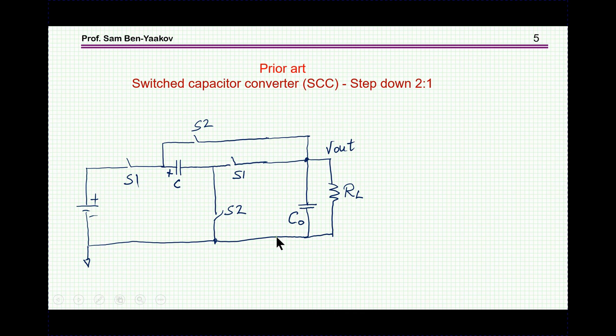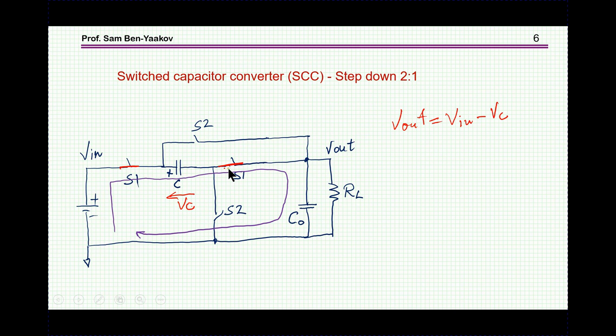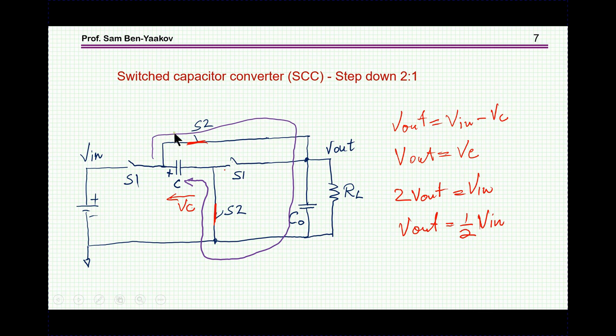Let me start off with something which is prior art, and this is a switch capacitor converter. A step down 2 to 1 switch capacitor converter, very well known for many years, probably 20, 30 years already. We have here a flying capacitor and four switches in this configuration. S1 and S1 work together, as well as S2. When S1 and S1 are on, we are connecting the input via the capacitor to the output. So we have V out is V in minus voltage of the capacitor. And then when the S2 pair are on, we are connecting the capacitor in parallel to the output. V out equals VC, from which we find that V out is half V in.